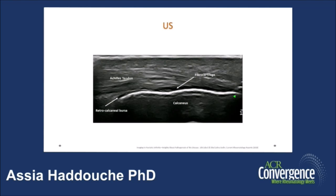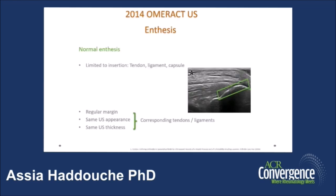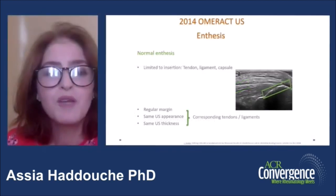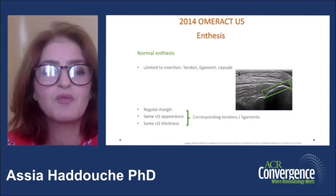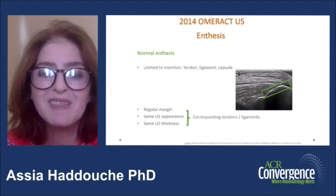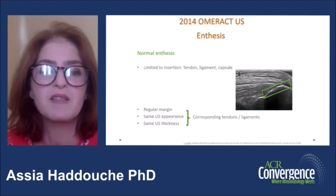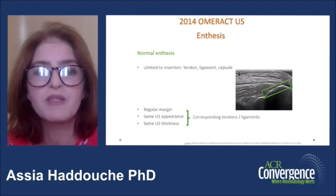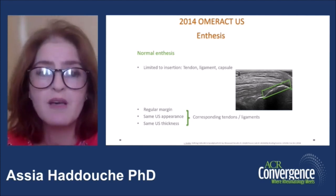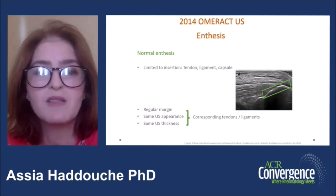In this image you see the longitudinal view on ultrasound of the Achilles tendon. We see the insertion of the tendon at the level of the bone, the fibrocartilage, the retrocalcaneal bursa, and the bony cortex of the calcaneus. In 2014, the OMERACT group published the ultrasound definition of normal enthesis, limiting it to the area of the insertion of tendon, ligament, and capsule, contrary to the concept of the enthesis organ — excluding the bursa and the body of the tendon.